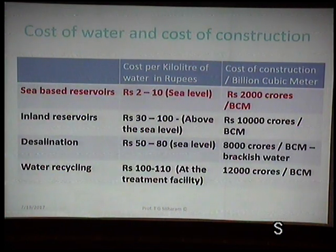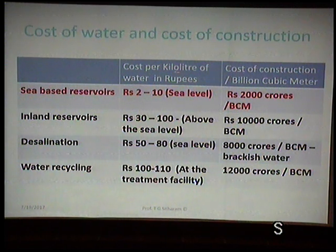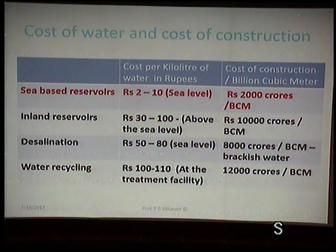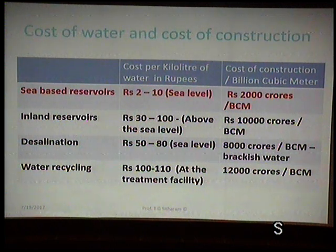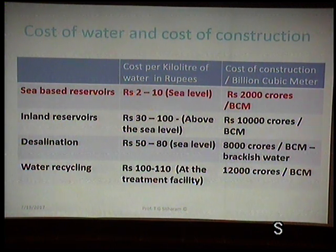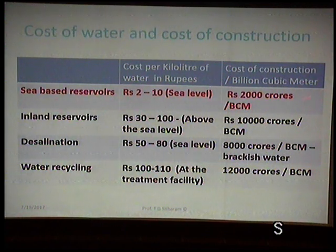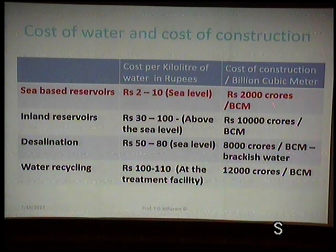The sea-based or coastal reservoir cost per kiloliter — that is, 1 cubic meter of water — is around 2 to 10 rupees. No pumping cost is included here. The cost of construction per billion cubic meters of water storage is around 2,000 crores. It's not very expensive today.